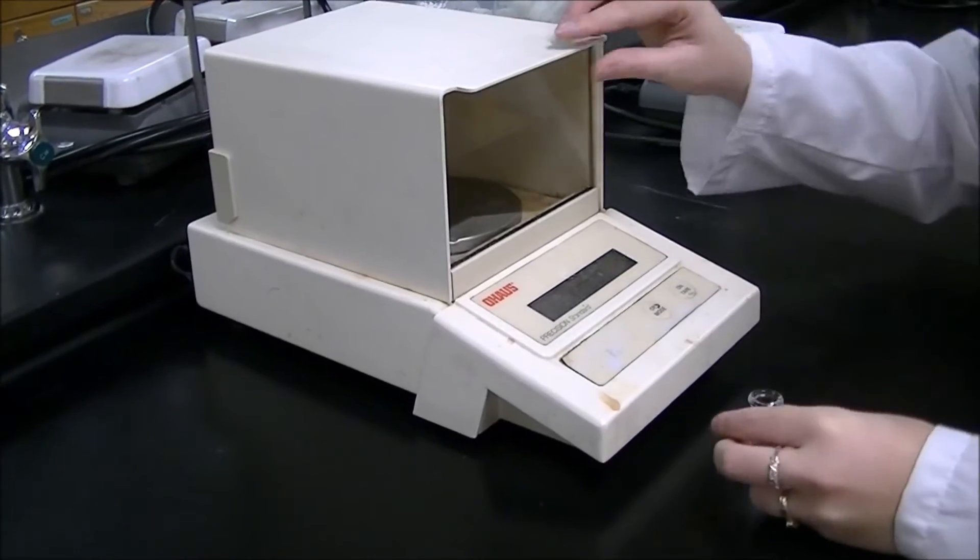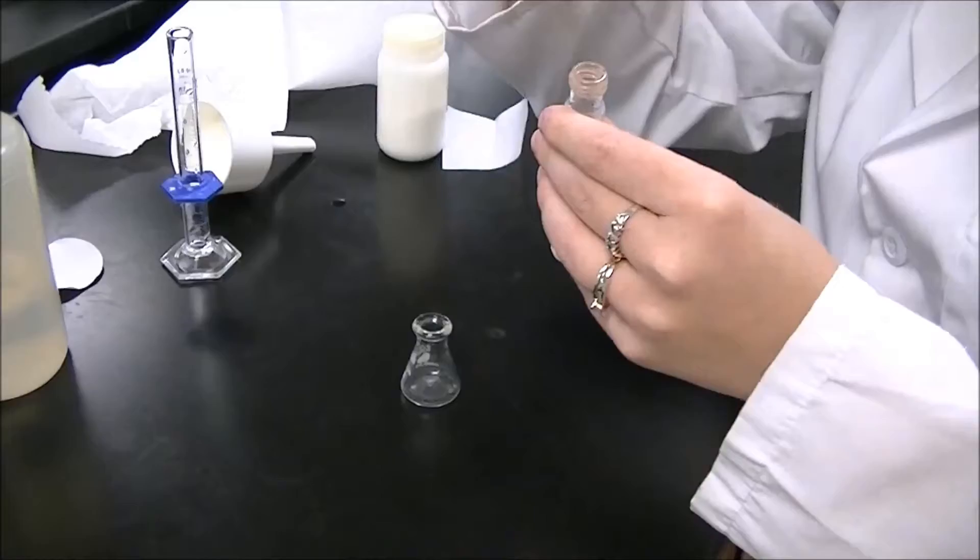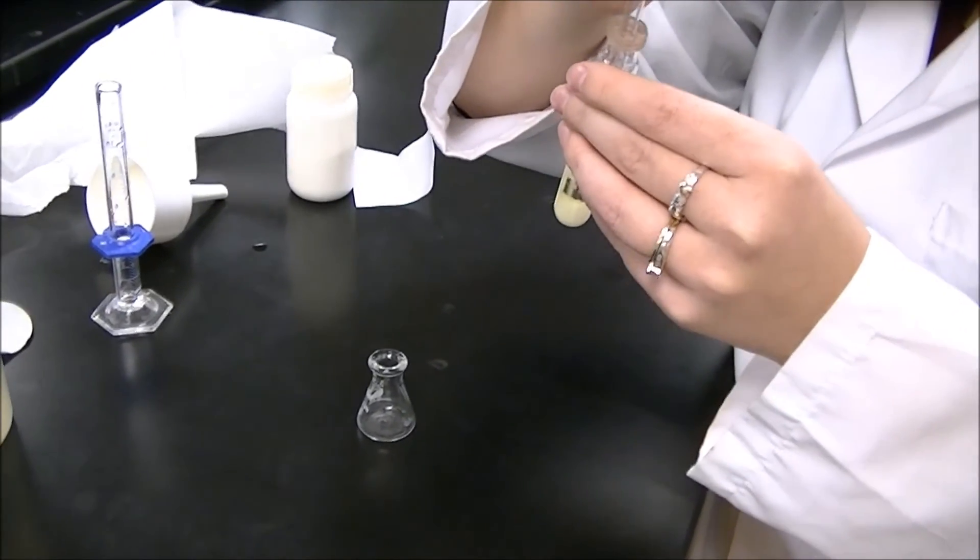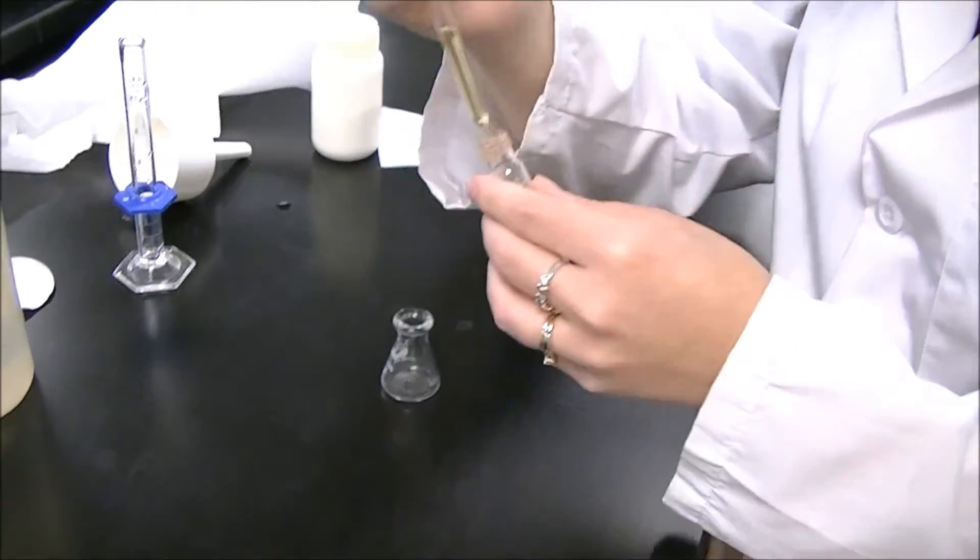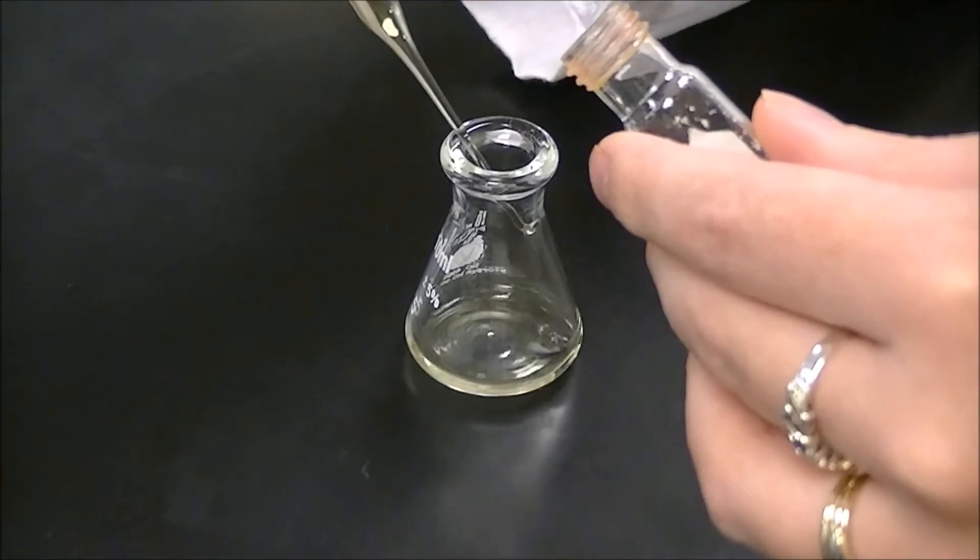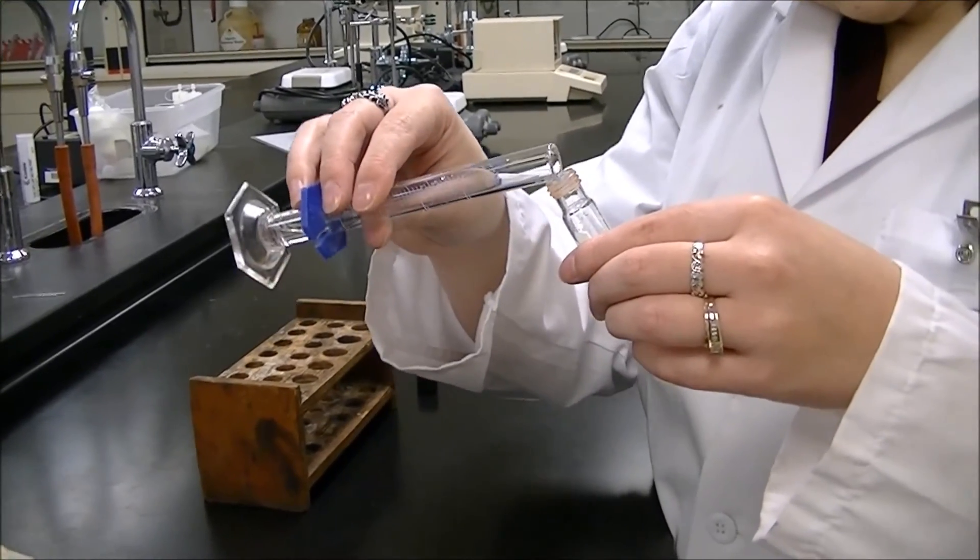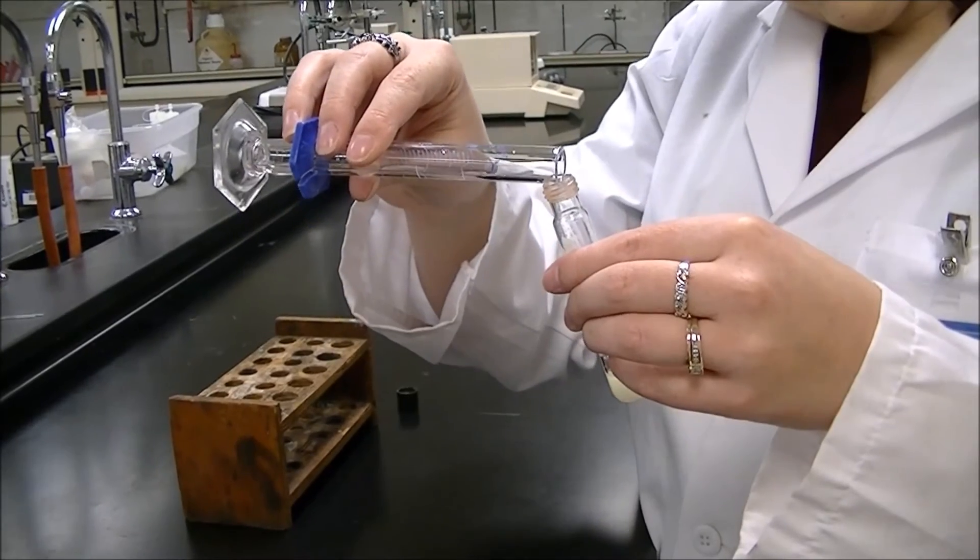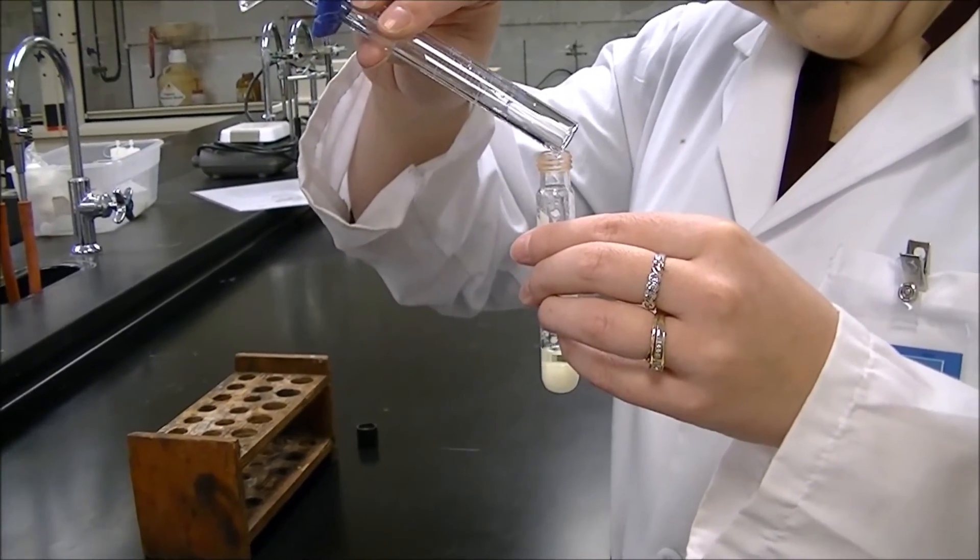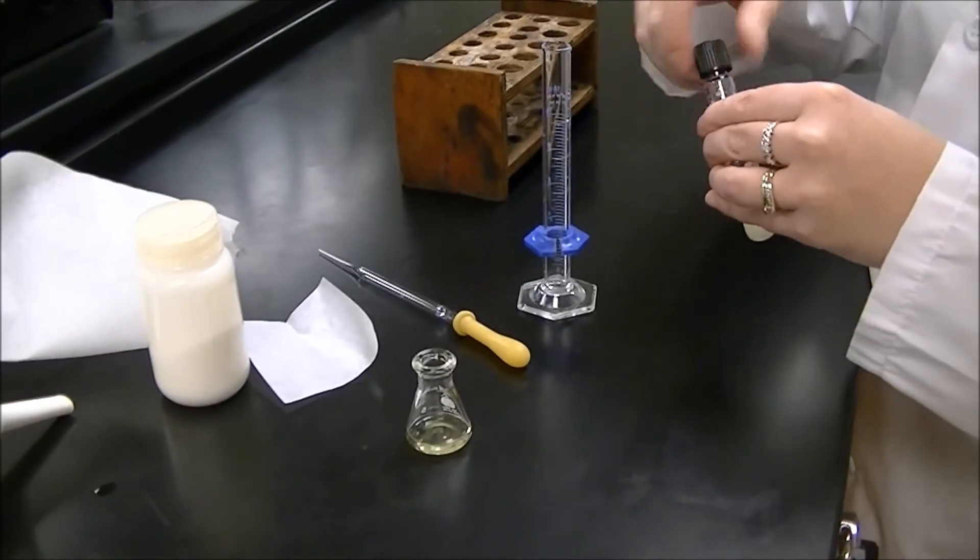Tare a 10-milliliter Erlenmeyer flask by recording its mass. With a boiling stone added, transfer your dry diethyl ether into your tared Erlenmeyer flask. Wash the sodium sulfate with 1 milliliter of diethyl ether, and then remove that diethyl ether and add it to the Erlenmeyer flask.